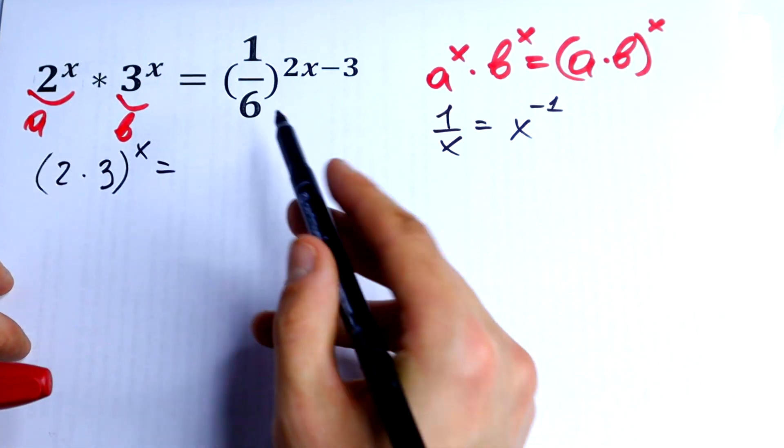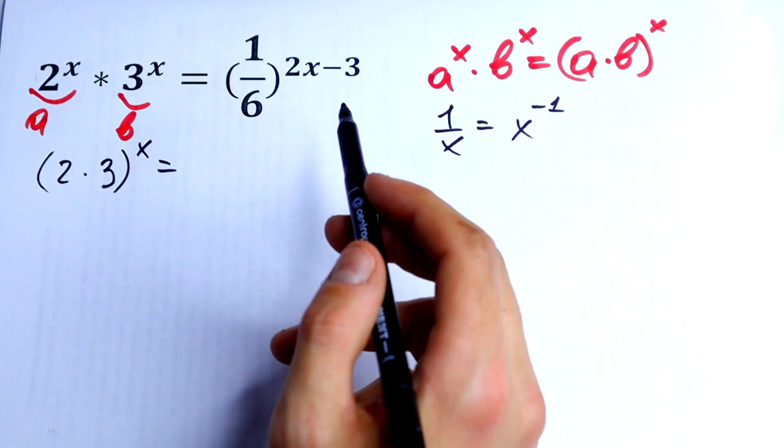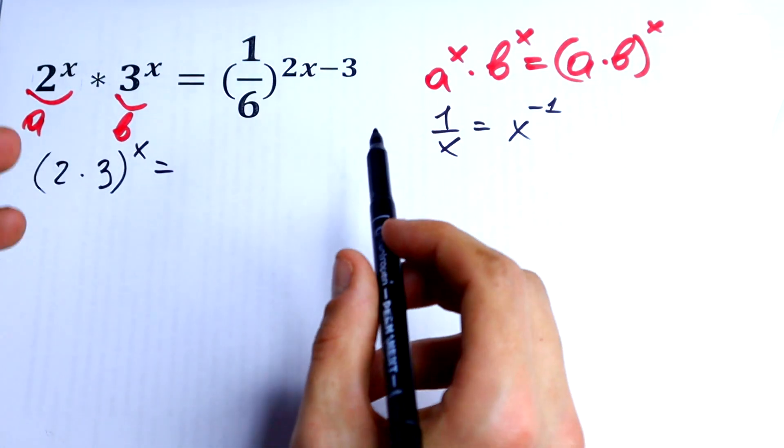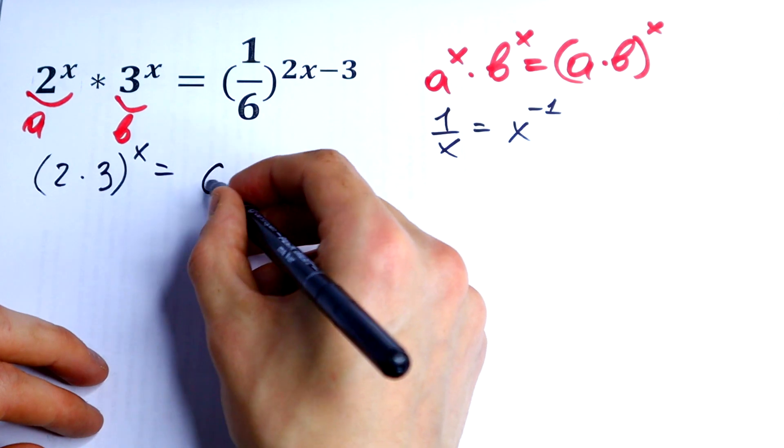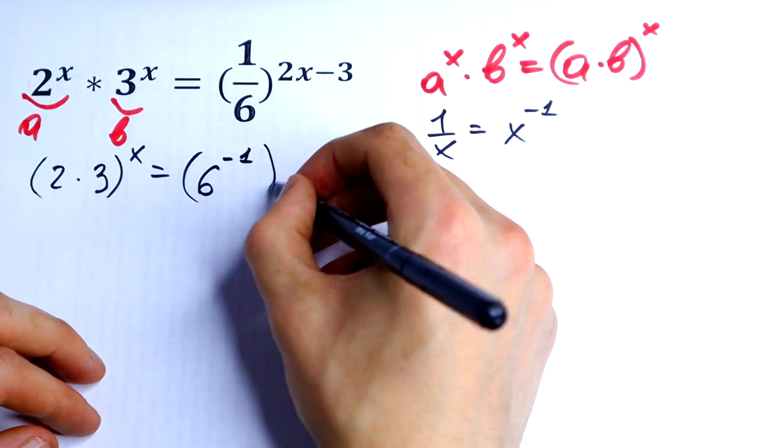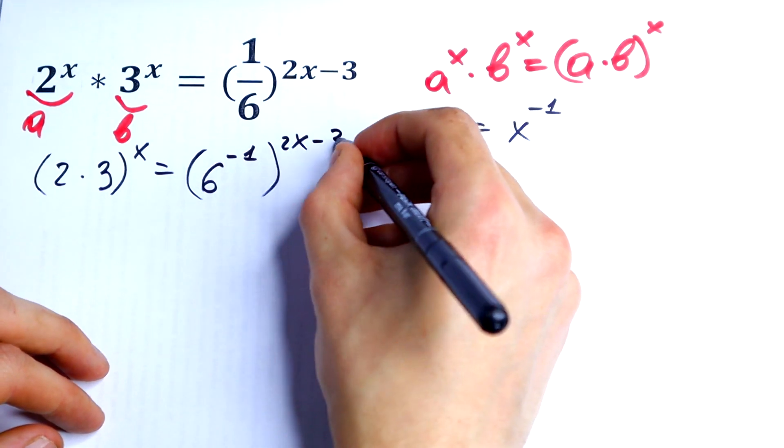Now using this rule, we don't need the 6 in the denominator, so it becomes 6^(-1), all raised to the power (2x-3).